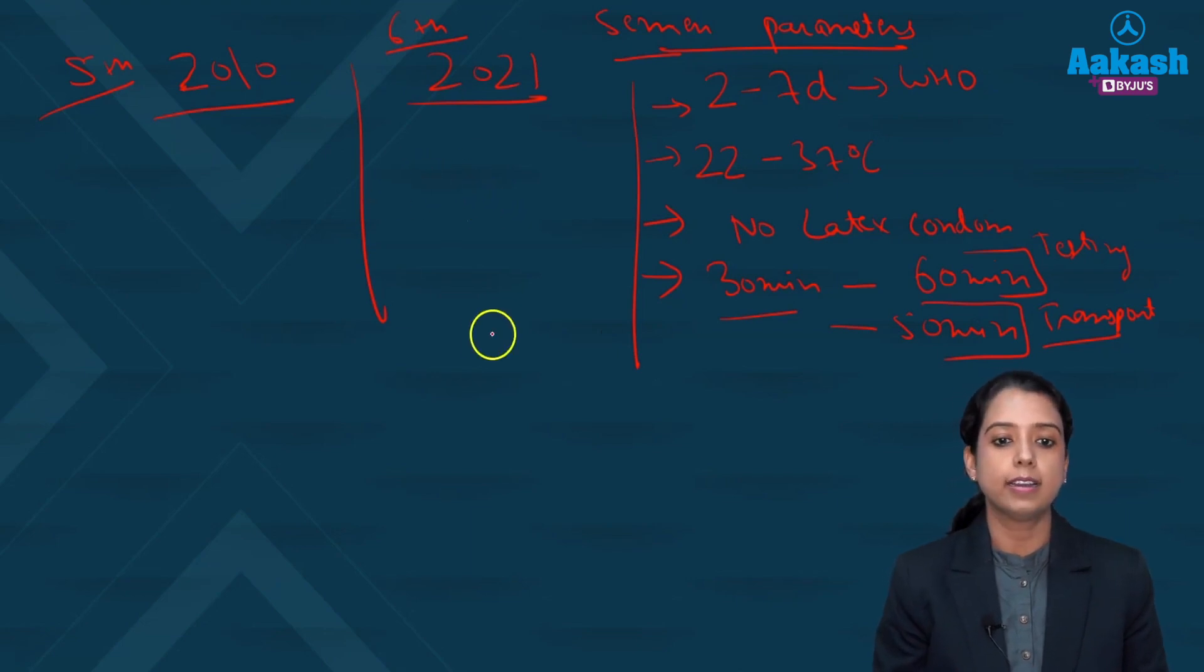So in this sixth edition huge sample of almost 3000 men varying from different area was taken to create a better cutoff. So the cutoff is not very different from 2010 but yes it is different and you should know whatever the change is there.